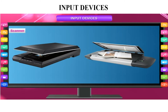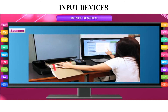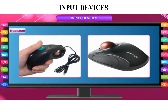The scanner is the next input device. It is used to scan pictures and text — whatever we have written in our textbook or notebook. It scans and stores it in the computer. You can see the scanned book displayed on the computer screen and the scanner machine here.